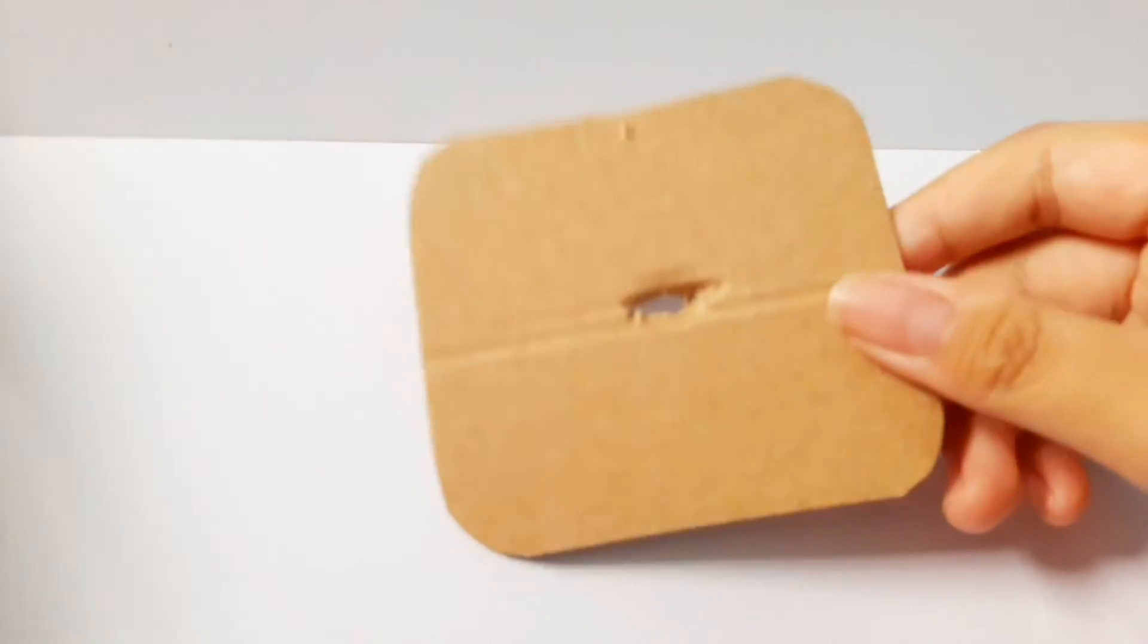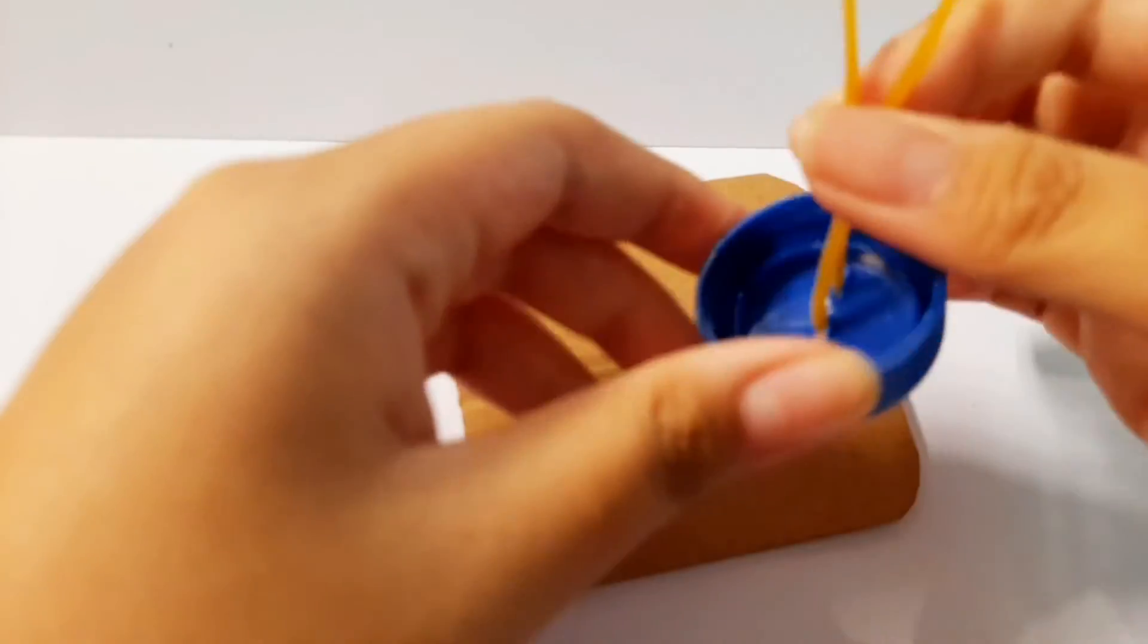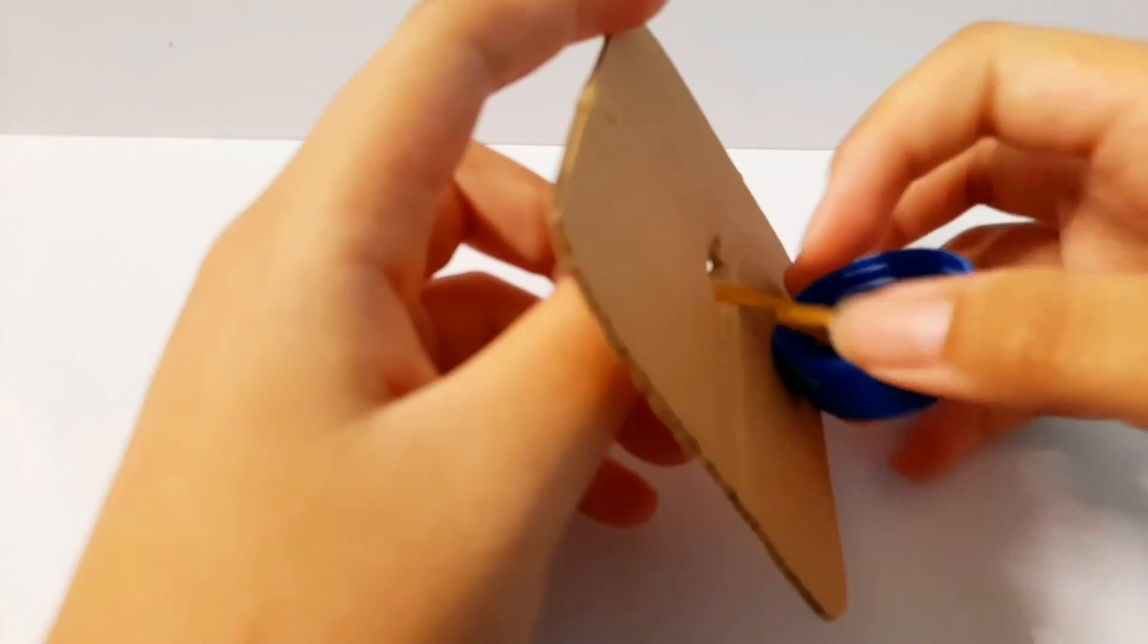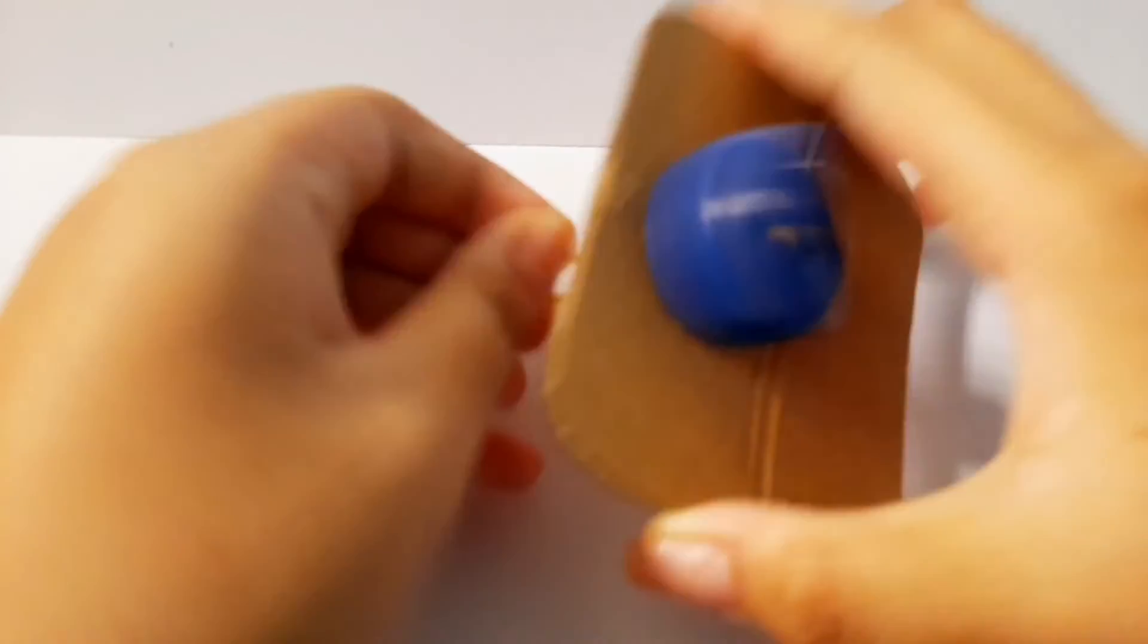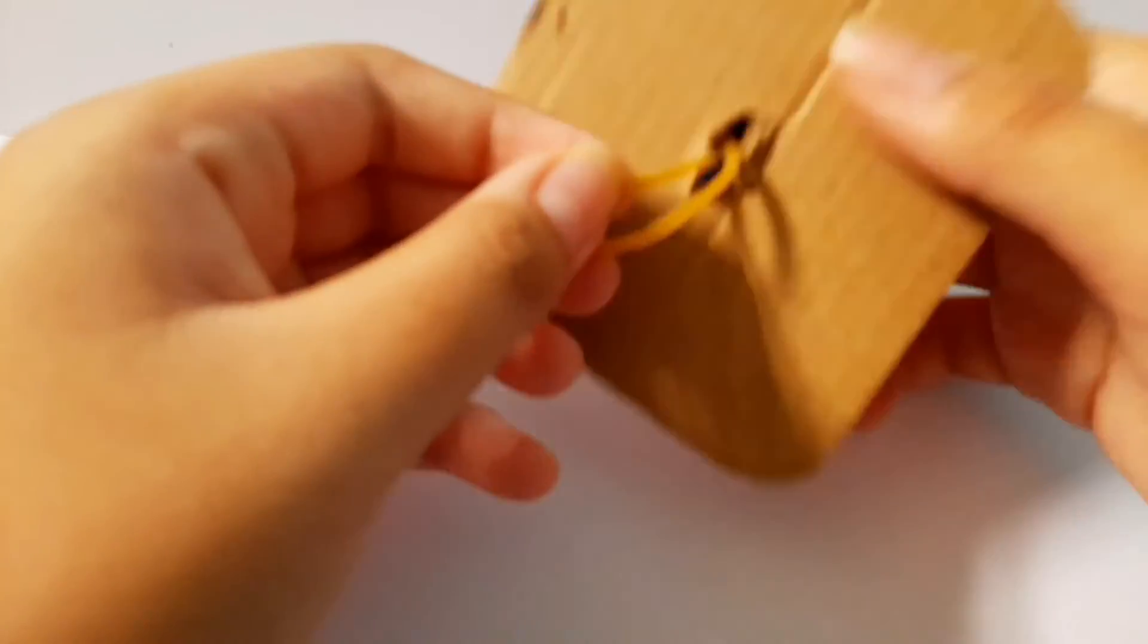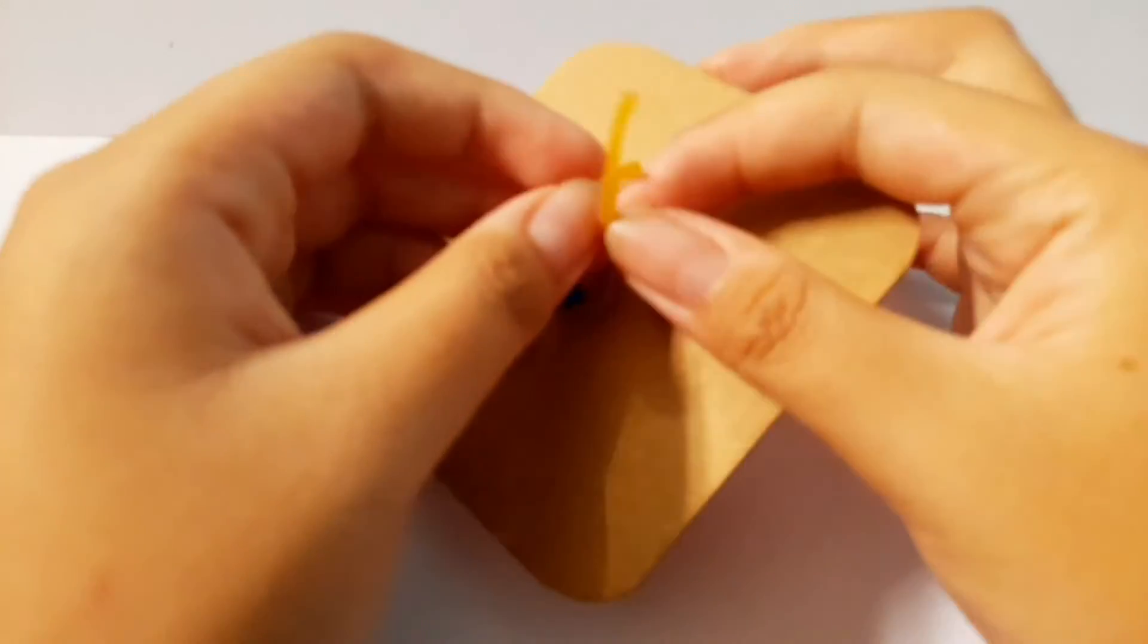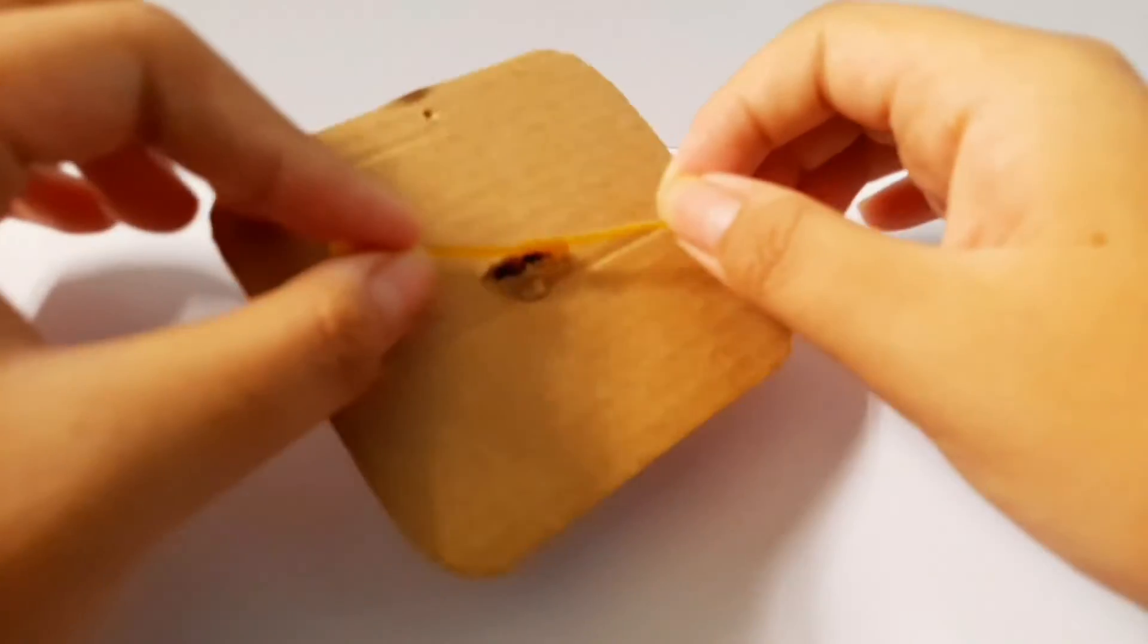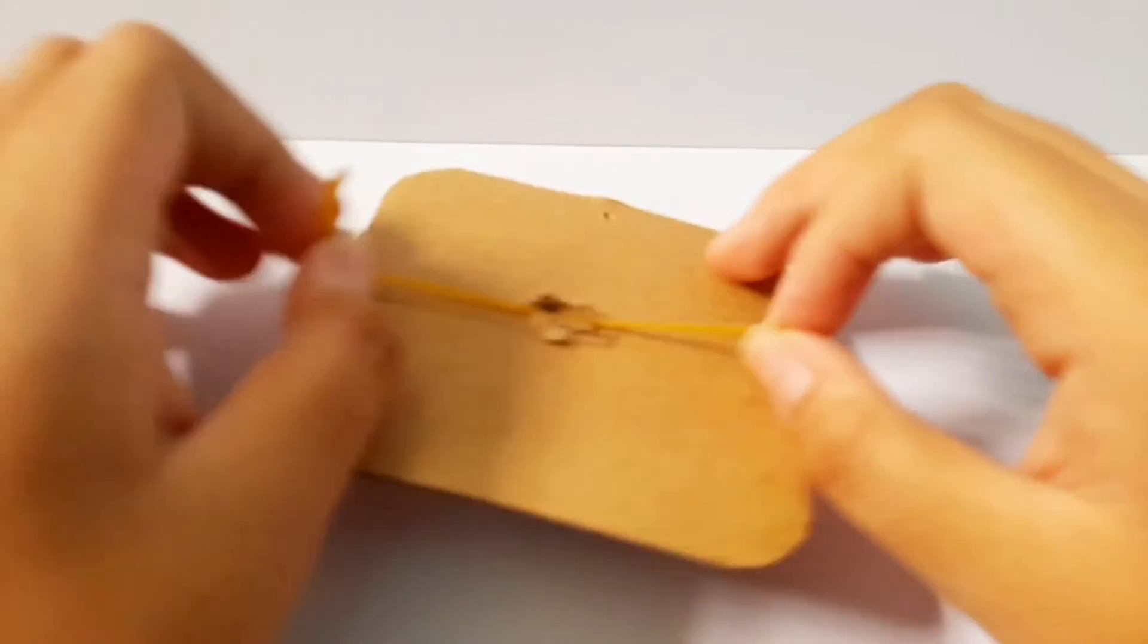Next, take your water bottle cap, then put these two rubber bands inside of this hole. Next, tie a knot. You can do a double knot if you want.